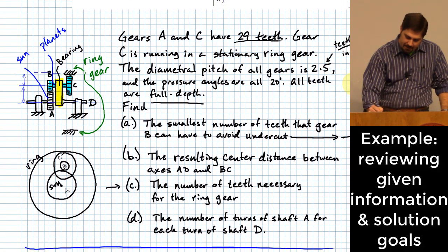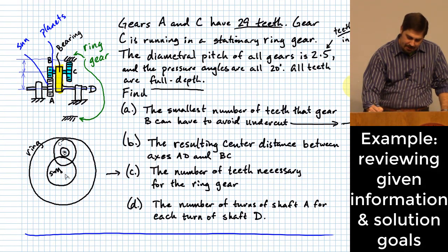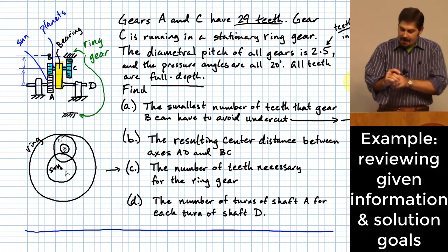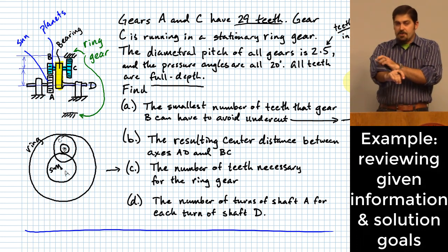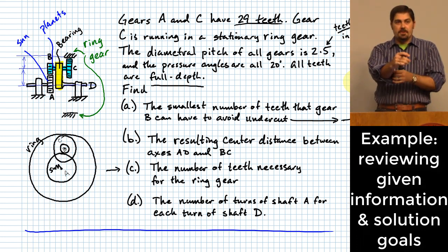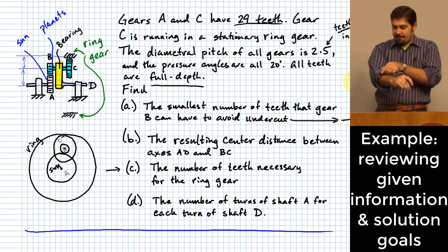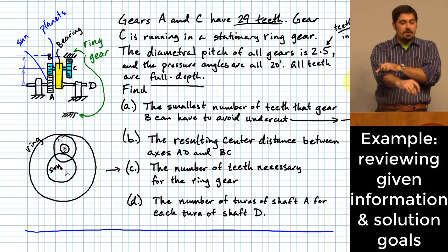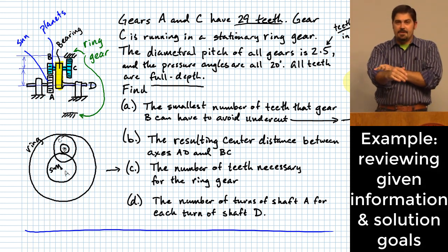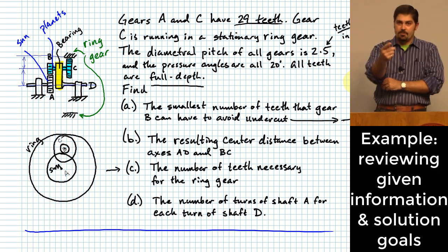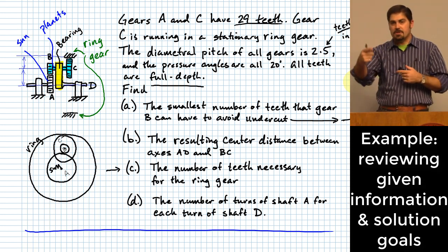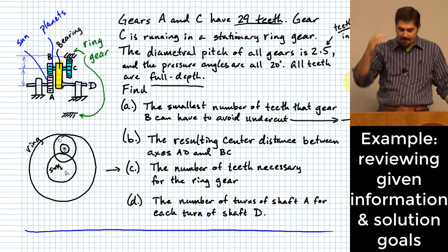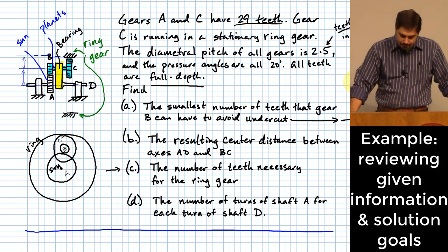The other aspect of gear geometry has to do with how you use gears to get particular ratios — input speed versus output speed and that kind of thing.